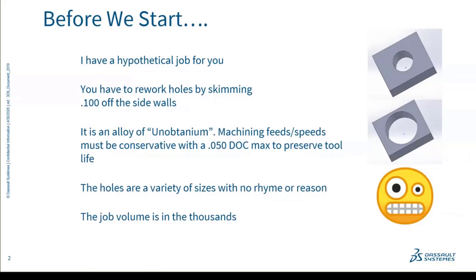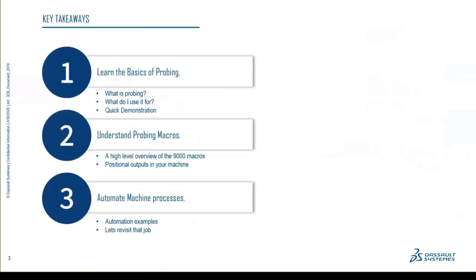The key takeaways from what we're going to cover today: hopefully you'll learn some of the basics of probing, what it's for, how we use it, with a quick demo. Then we'll dive into the macros that power the probing sequences — I call them the 9000 macros — what they do, how they create positional outputs in your machine. The last part is about taking that information and automating your processes so the machine actually makes decisions for you. At the end, we'll revisit that hypothetical job.